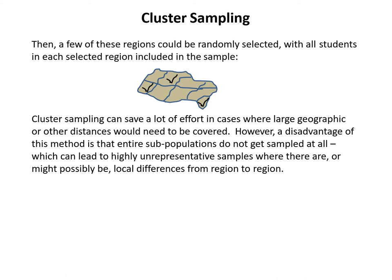However, the common criterion for all random samples is that every individual in the population has the same probability of being selected. As long as all of the clusters have the same population and we're selecting clusters randomly, we do satisfy that criterion — every individual regardless of which cluster they're in has the same probability of being selected, even though at the end it comes down to an all-or-nothing situation. Because it meets the criterion of equal probability for all individuals, cluster sampling is a random sampling method and can provide significant savings when covering the entire population is unfeasible.